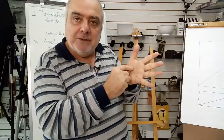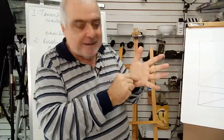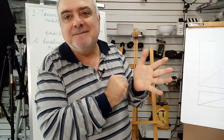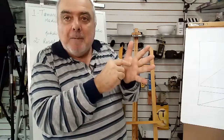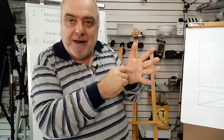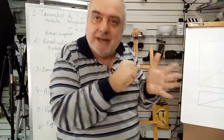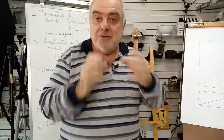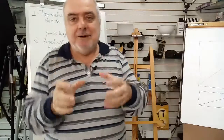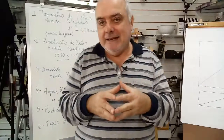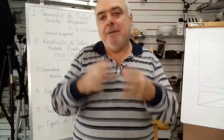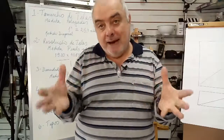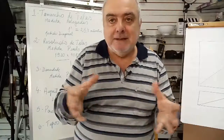Se eu aumentar muito um pixel, vou ver que aquilo que parece redondo, na realidade, é quadrado — porque aumentei muito aquele ponto, e ele é quadrado. Mas se naquele espaço eu colocar vários pontos, posso fazer algo arredondado. Isso é muito importante, porque daqui para frente, tudo que você vai entender de televisão ou telefone celular, a primeira coisa a comparar é quantos pixels tem.